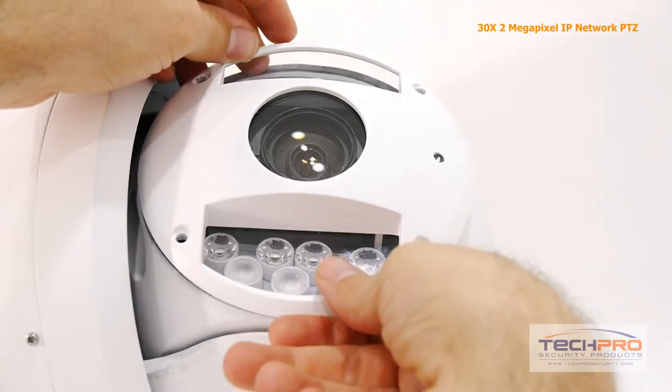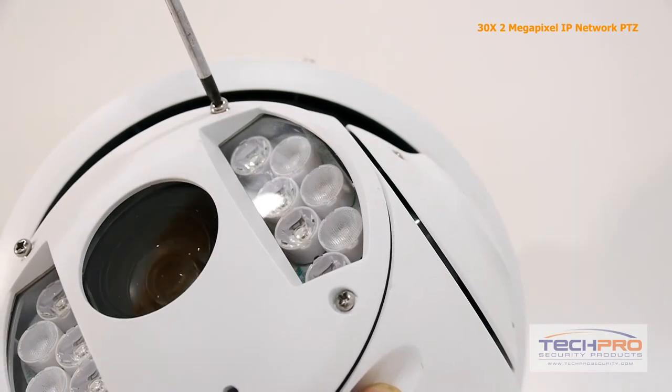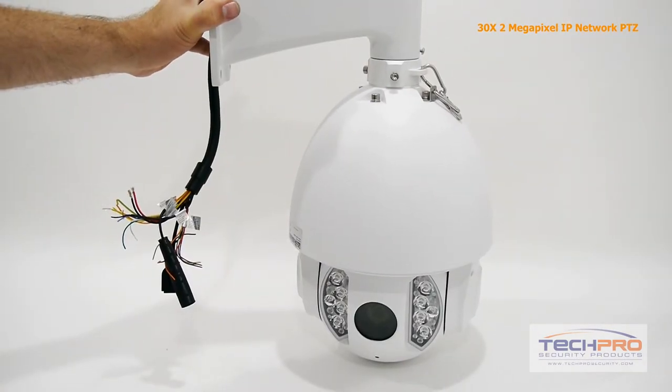When you reattach the faceplate, make sure the weather seal is secure and lined up with the holes with the screws, then screw the faceplate back on with the Philips. Now the camera is ready to be mounted to the wall.